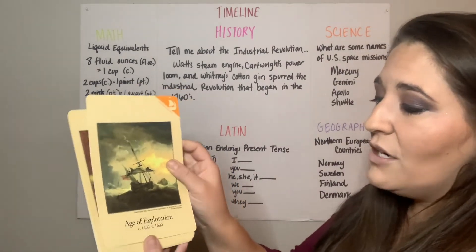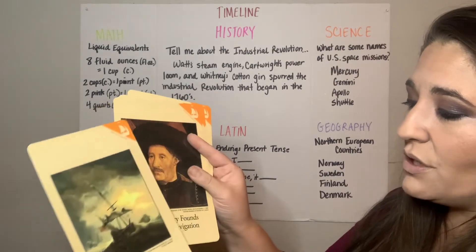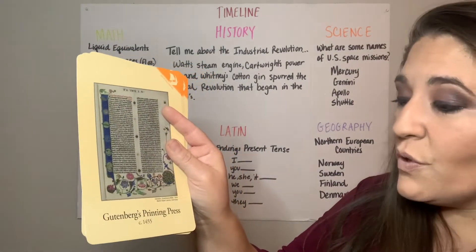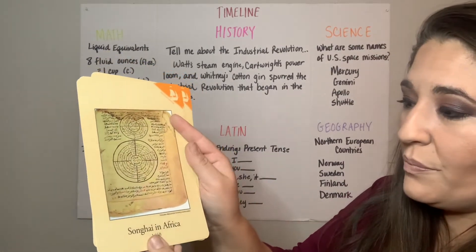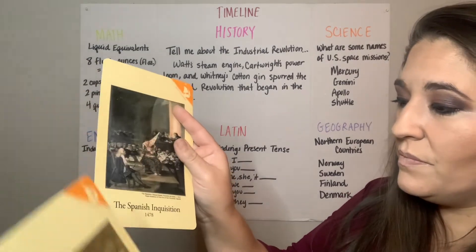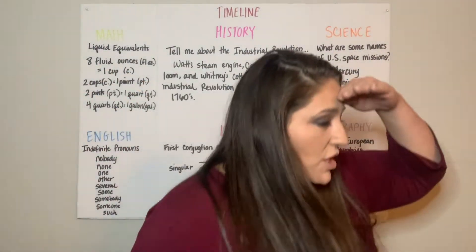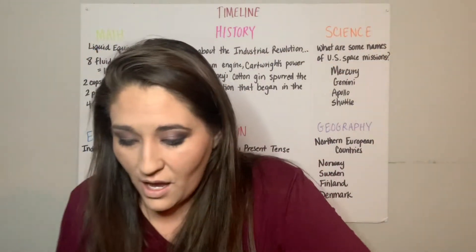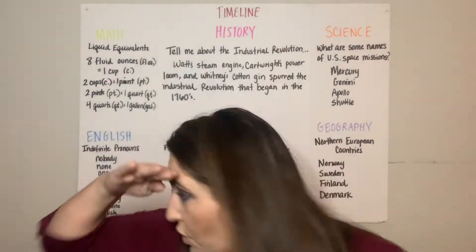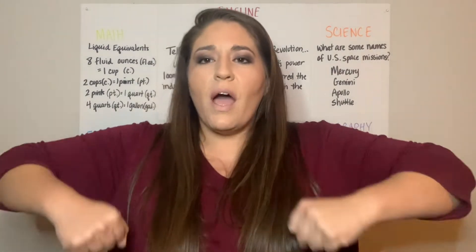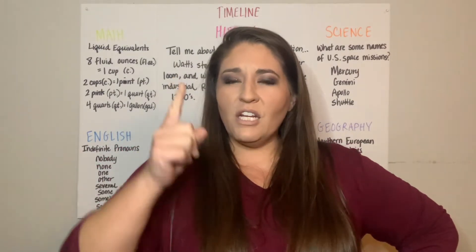We started off with the timeline cards. Age of Exploration, circa 1400 to circa 1600. Prince Henry's School of Navigation, Slave Trade in Africa, Gutenberg's Printing Press, Songhai in Africa, Ivan the Great of Russia, The Spanish Inquisition — and we have motions to this. For Slave Trade in Africa, you put your hands behind your back.